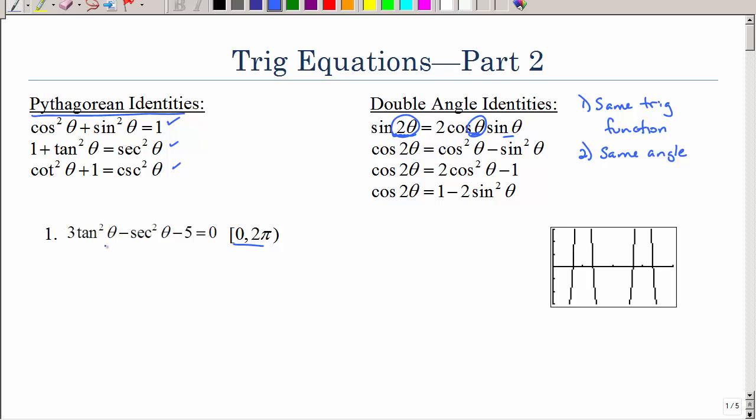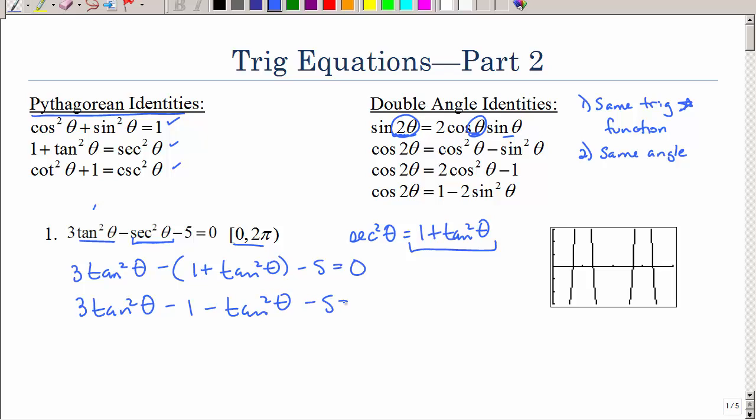So let's just look at this first example. Notice we have tangent squared and secant squared. So we want to have that same trig function. So you ask yourself, how could I change the secant squared into tangent or tangent into secant? Now, personally, I would rather work with tangent because those are the values I kind of know a little bit better on my unit circle as opposed to secant. So let's see, secant squared θ is equal to 1 plus tangent squared θ. So I want to substitute that in right here and I want to be careful of that negative sign. Then I'm going to distribute the negative sign and I'm going to collect like terms.